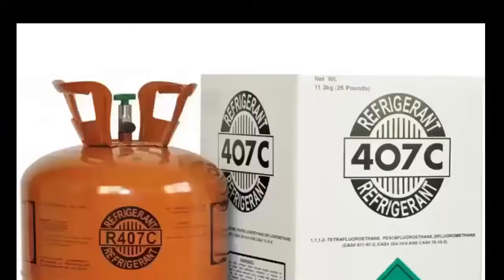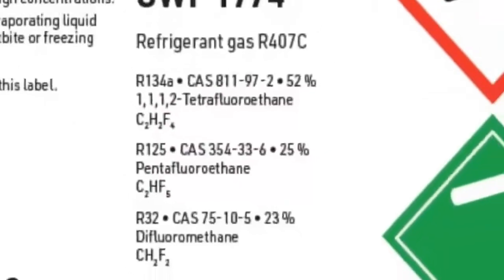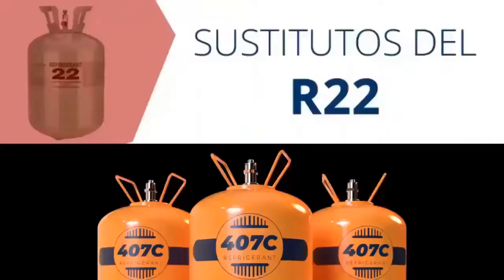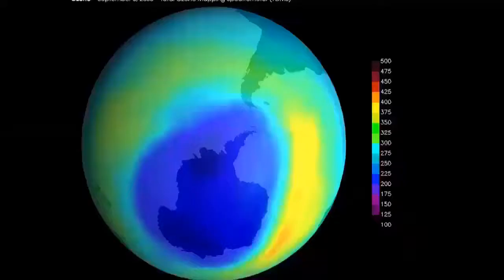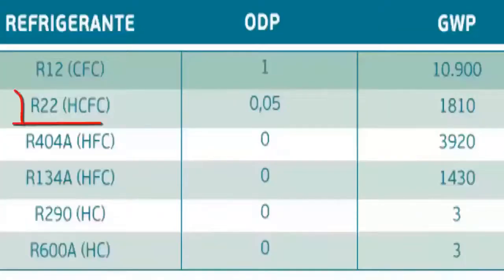R407C is a mixture made up of R32, R125, and R134A gases, with properties including pressure, capacity, and efficiency that are extremely similar to those of R22. It is precisely this similarity that makes R407C used as a replacement for R22, both in equipment already in service and in new systems. Let's remember that R22 must be replaced because it destroys the ozone layer.